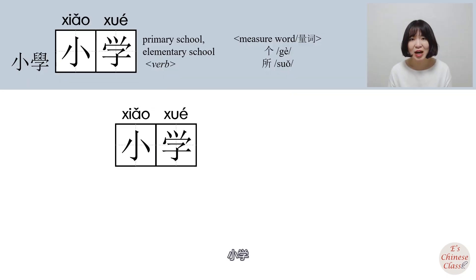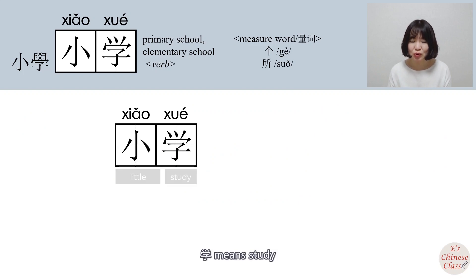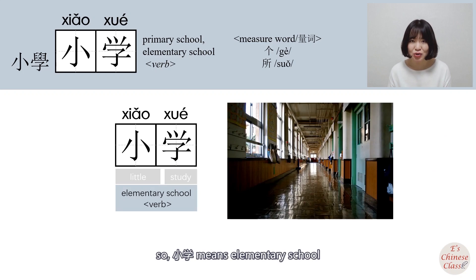小学 — 小 means little, 学 means school. So 小学 means elementary school.